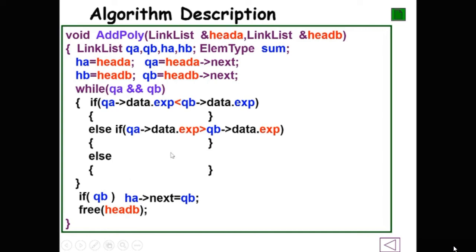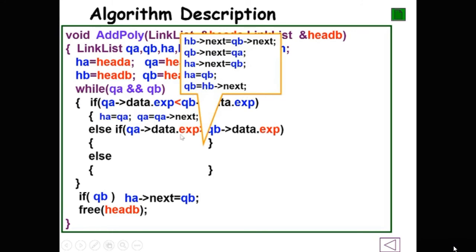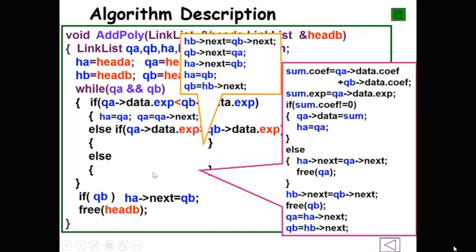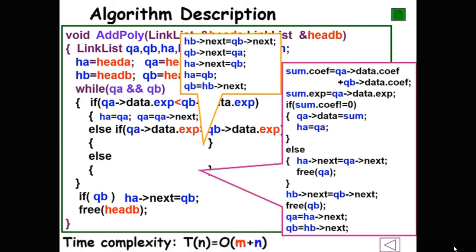If either QA or QB is null, break out of the loop and check. If QB has not reached the tail, link the remaining nodes to HA and free the head node. The three branches are: first, HA and QA move forward (easiest case); second, handle the insertion case; third, calculate the sum of coefficients with two sub-branches for zero and non-zero sum. The time complexity is linear — O(M + N) — since it processes all elements in list A and list B.